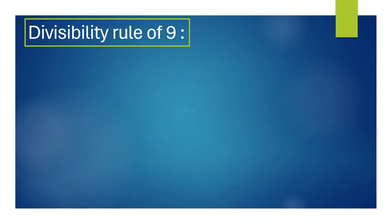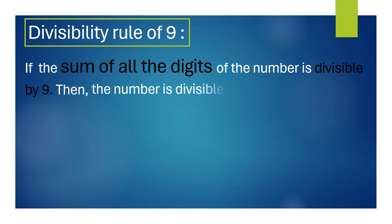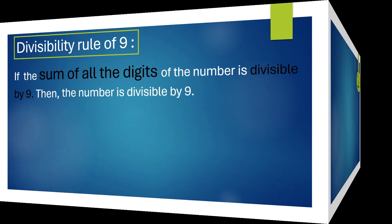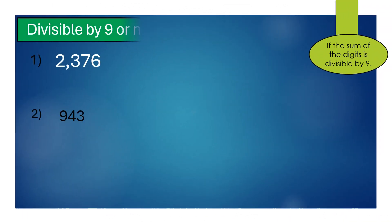Divisibility rule of 9: if the sum of all the digits of a number is divisible by 9, then the number is divisible by 9. Let's check whether these numbers are divisible by 9 or not.